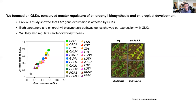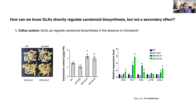In GLK1 and GLK2 double mutants, the chlorophyll content and the carotenoid content are lower than wild type, showing a pale green phenotype. But in GLK1 and GLK2 overexpression lines, they accumulated more chlorophyll and carotenoids. To determine whether GLK directly regulates carotenoid biosynthesis rather than as a secondary effect, we checked carotenoid accumulation in a callus system and found that GLK overexpression can upregulate carotenoid biosynthesis in the absence of chlorophyll accumulation. That means GLK regulation of carotenoids is independent from chlorophyll accumulation.